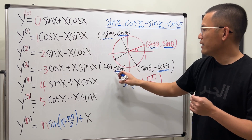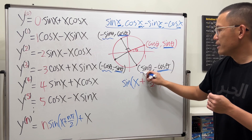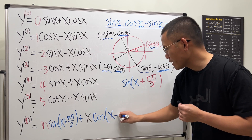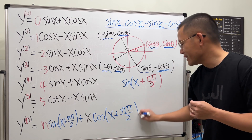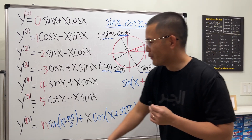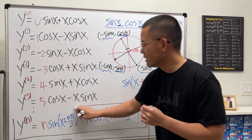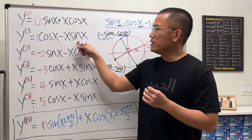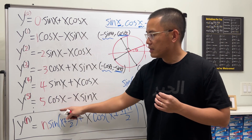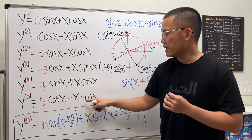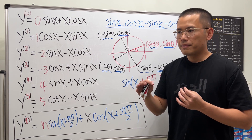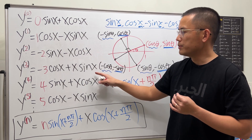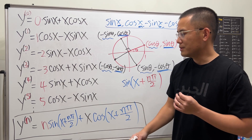The cosine version is cosine of (x + n·π/2). So the nth derivative of x·cosine x is: n·sine(x + n·π/2) + x·cosine(x + n·π/2). You can also write it as a piecewise definition based on the remainder when n is divided by 4 — giving cosine, negative sine, negative cosine, or positive sine accordingly.